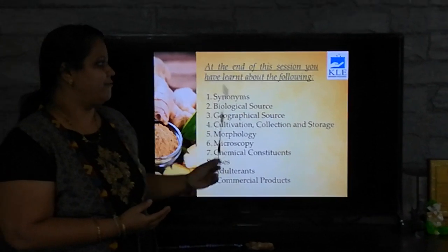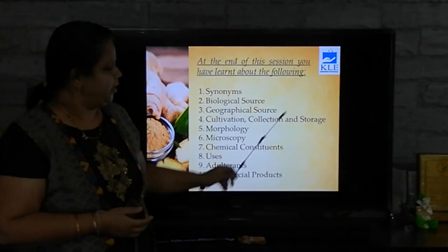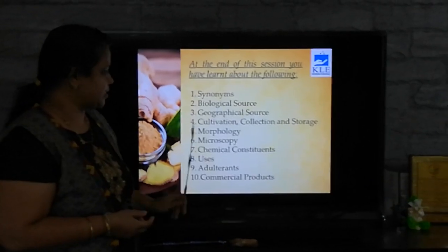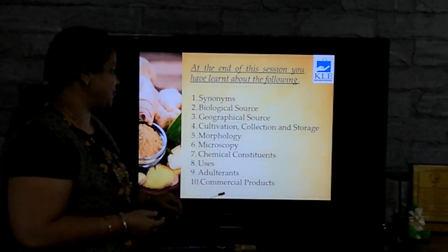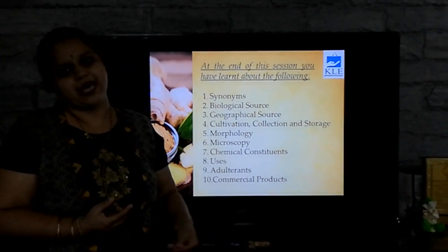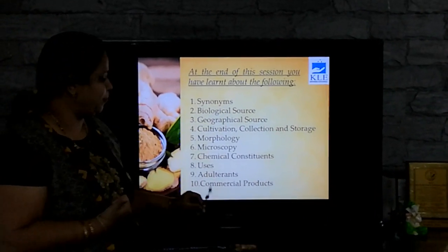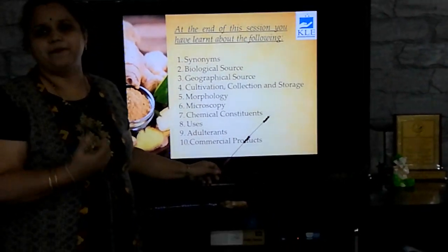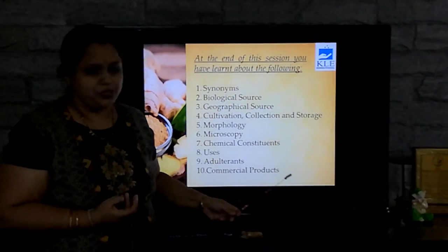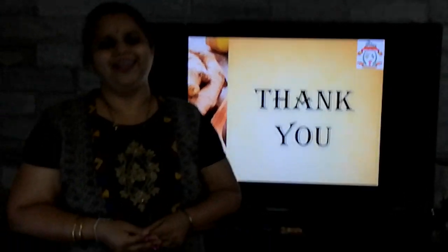I hope all of you have understood the session. At the end of this session, you have learned the following: synonyms of ginger, its biological source with family, its geographical source, cultivation, collection and storage, morphology described based on colour, odour, taste, shape, size and extra features, microscopy of ginger including transverse section and powder microscopy, chemical constituents — mainly volatile oils and resins — uses of ginger, adulterants and substitutes used, and various commercial products of ginger. I hope the session was interesting. Thank you.